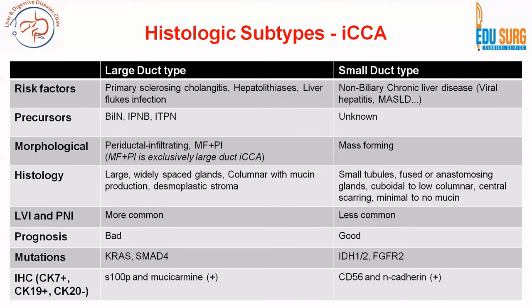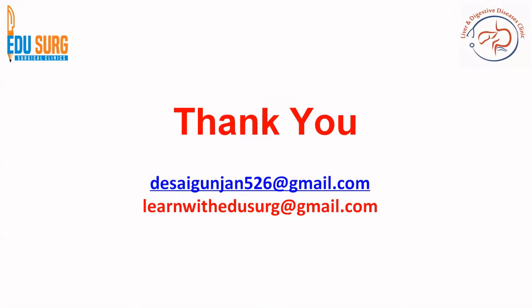In small duct type, there is no ductal thickening — the periductal infiltrating component is absent. Lymphovascular invasion (LVI) and perineural invasion (PNI) are more common in large duct type, giving it a worse prognosis. Small duct type has a better prognosis because it has actionable targets in therapy. In the next part of this video we will go towards the clinical presentation of ICCA, then diagnosis, and then management in resectable as well as locally advanced cases. Thank you.